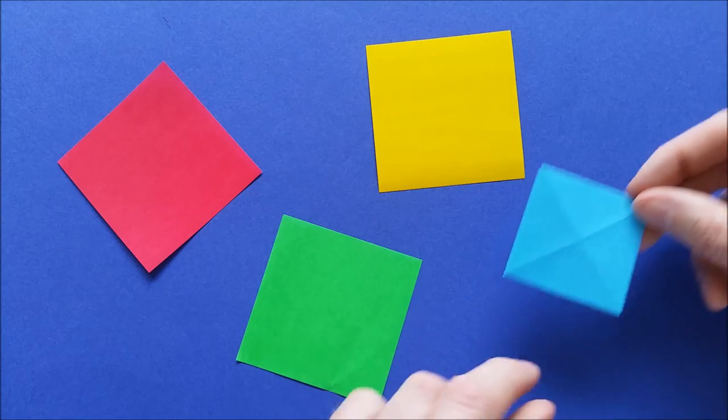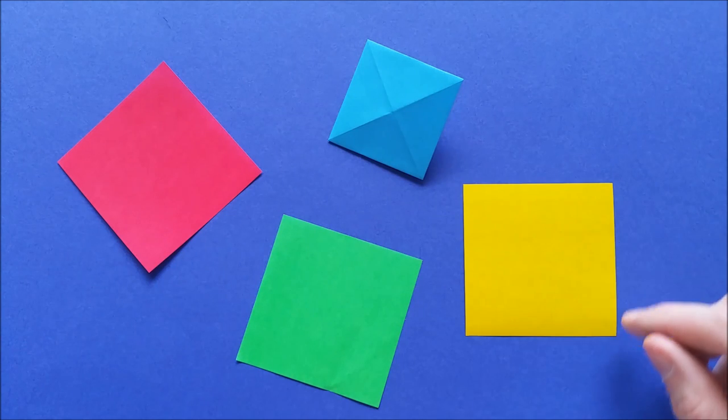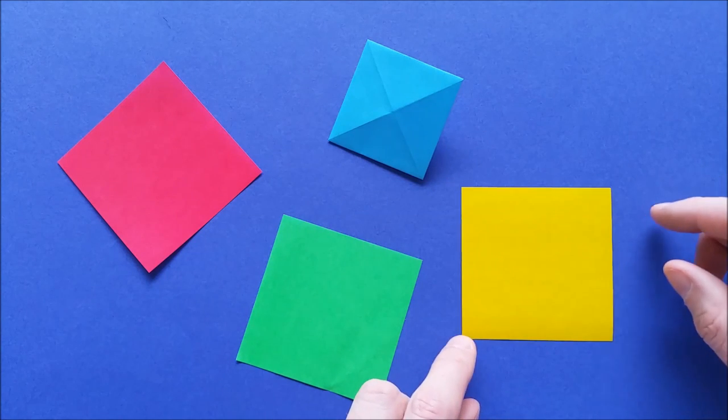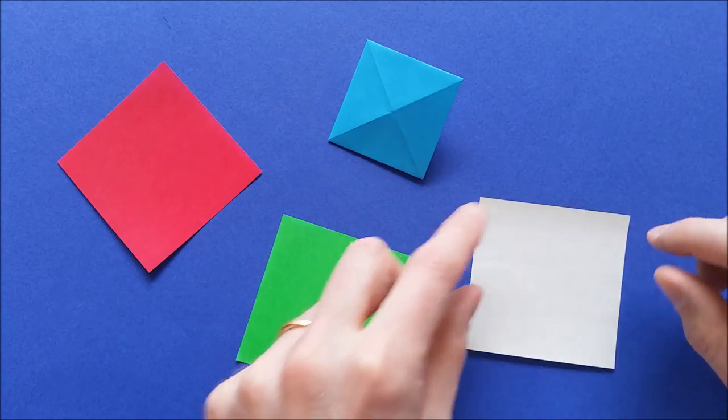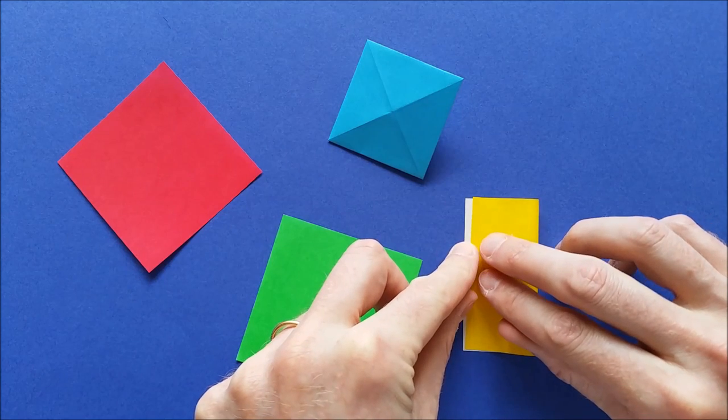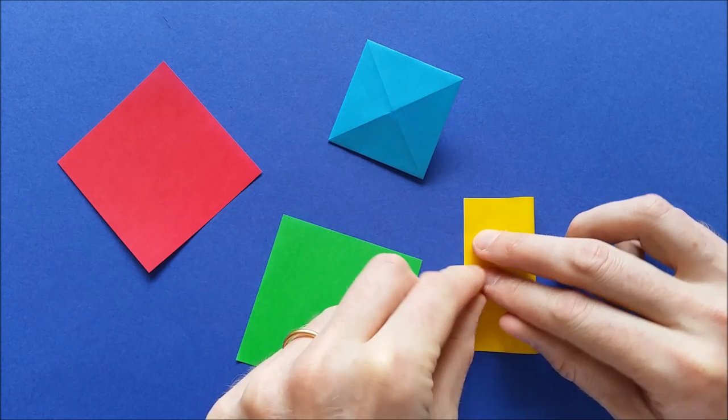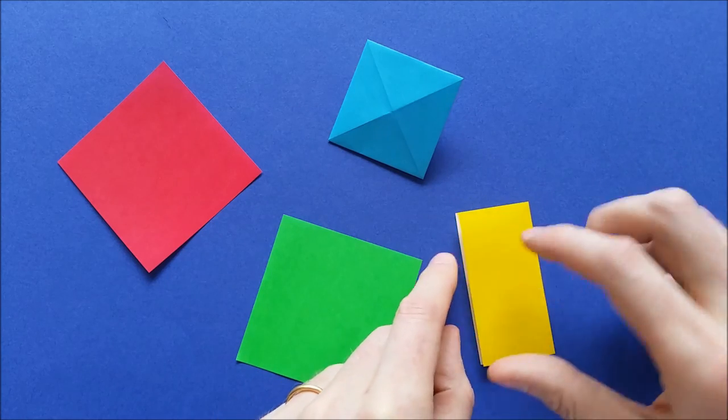To make each origami pixel you need a square piece of paper. This one is 7 by 7 centimeters, about 3 inches, and we'll start with the color on the bottom. Then fold the square vertically. Mark the fold and unfold.